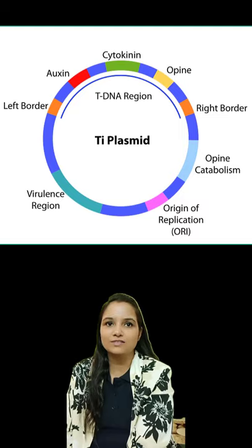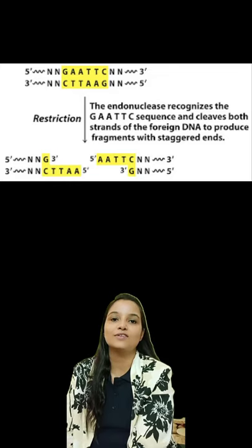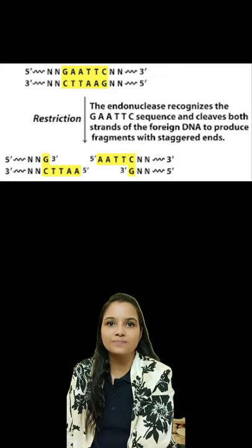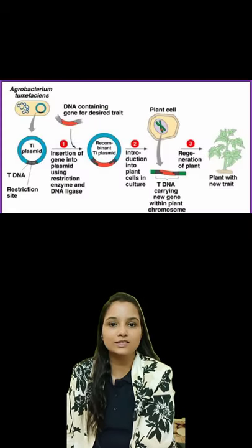Ti plasmid transforms cells of plants, and GAATTC is the recognition site for the restriction endonuclease enzyme EcoRI, which is used in natural genetic engineering by Agrobacterium tumefaciens.